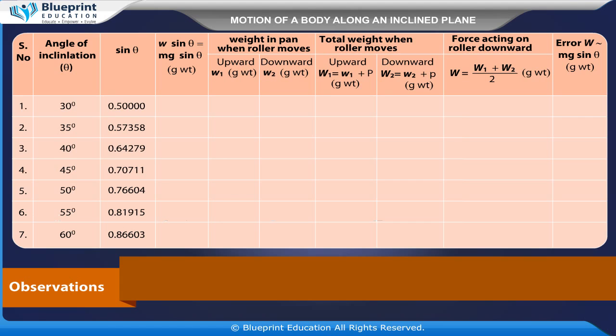W sin theta equals Mg sin theta gram weight. Weight in pan when roller moves upward W1 gram weight, downward W2 gram weight. Total weight when roller moves upward W1 equals W1 plus P gram weight. Downward W2 equals W2 plus P gram weight. Force acting on roller downward W equals W1 plus W2 by 2 gram weight.